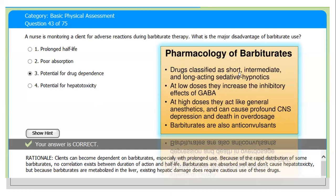Barbiturates, the drugs are classified as short, intermediate, and long-acting sedatives and/or hypnotics. We use barbiturates as anxiolytics, as hypnotics, or as anticonvulsant medication. At low doses they increase the inhibitory effect of GABA. GABA is a neurotransmitter, we call it an inhibitory effect. At high doses they act like general anesthetics and can cause profound central nervous system depression and death in overdoses. Barbiturates also have anticonvulsant properties.